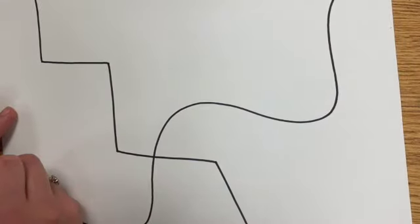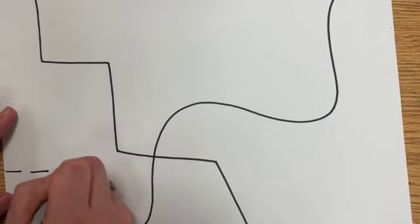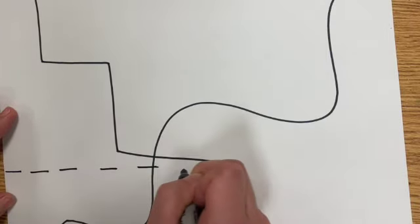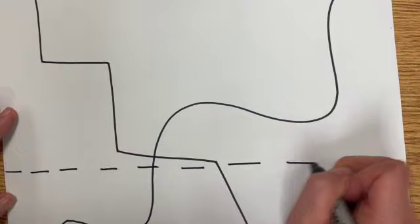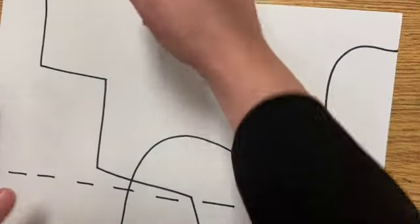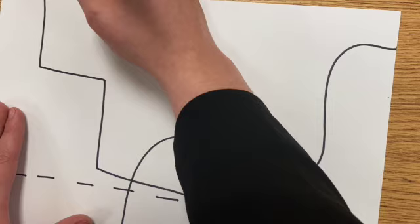I want to go back across this way and I think for this one I'm going to do a dashed line. So I'm going straight across—this line is horizontal.